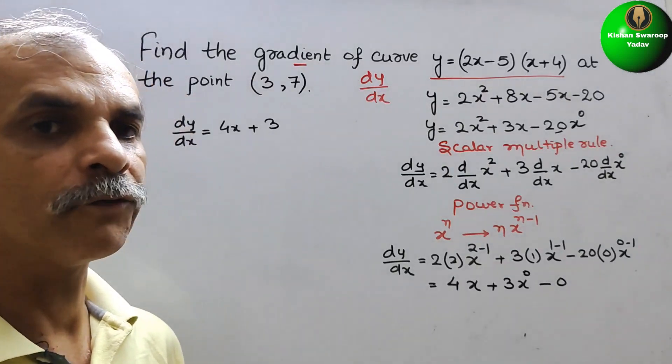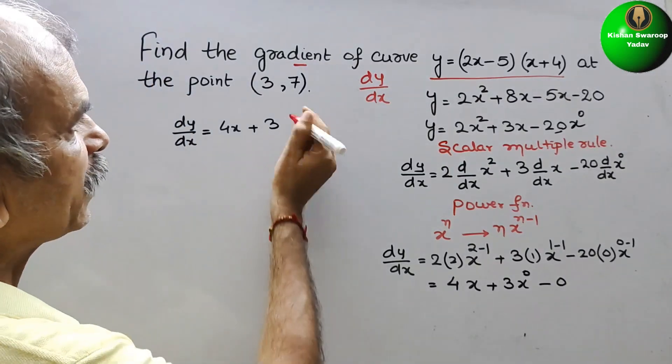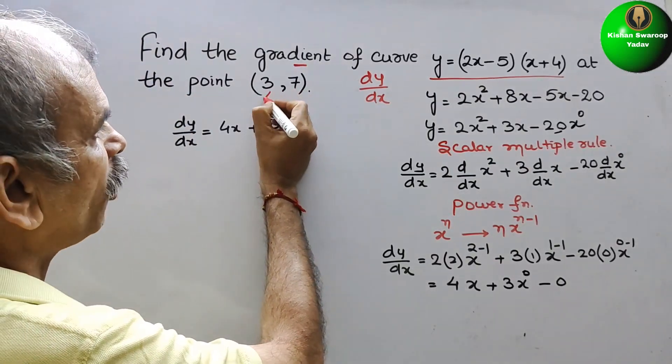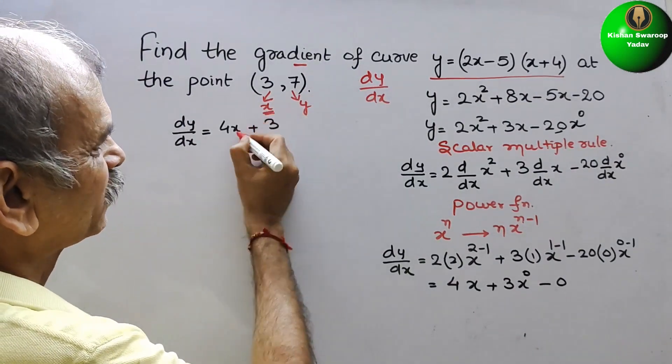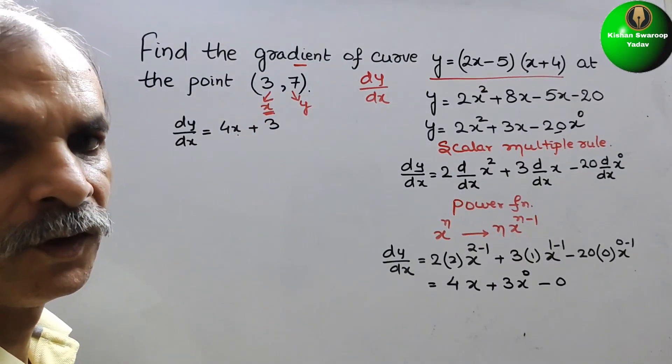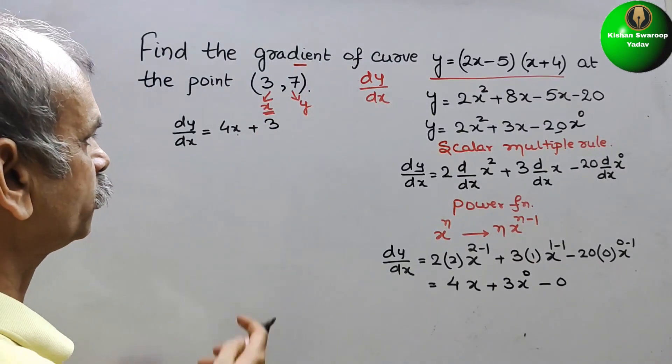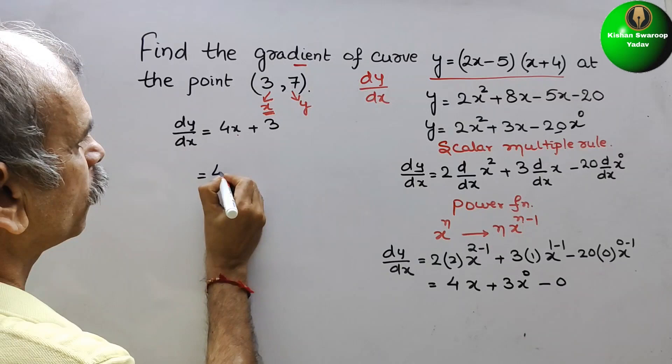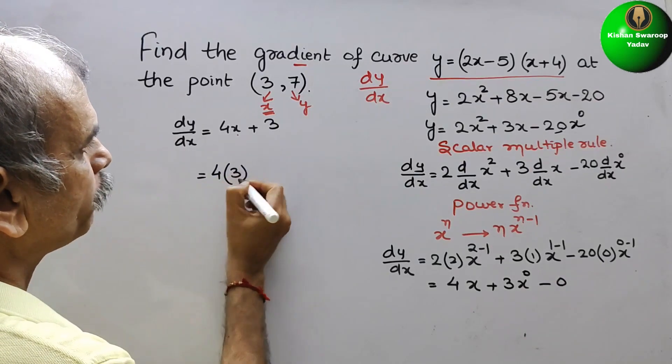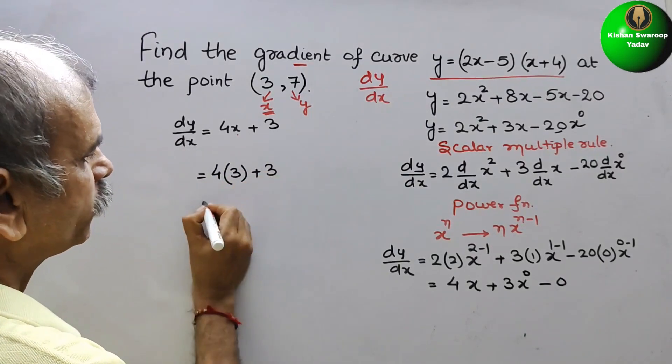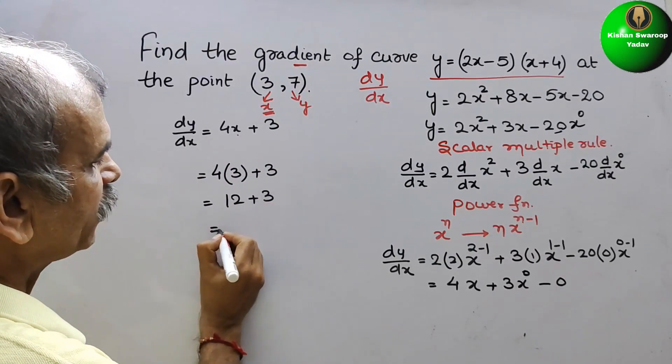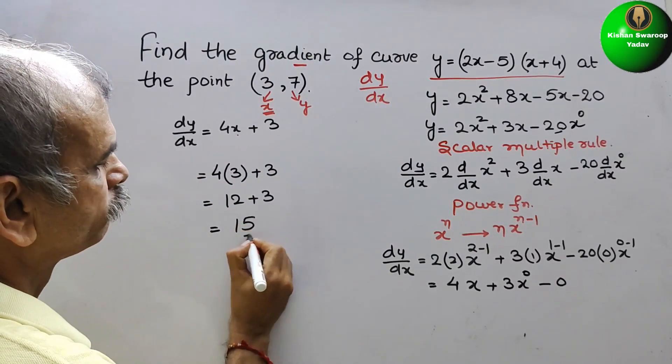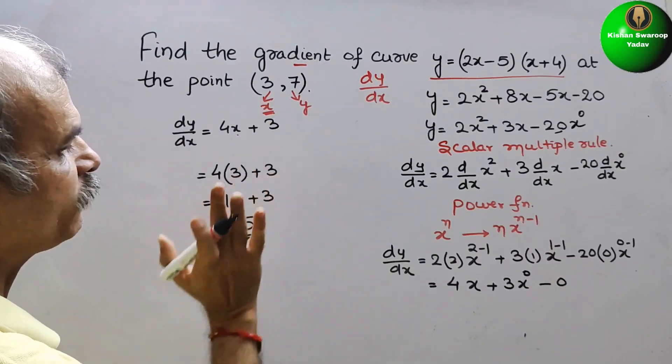Now what we have to do? You can see the coordinate here. So this is for x and this is for y. So we want only x to substitute here. So just substitute it. So therefore we will get 4 times 3 plus 3. So this is equal to 12 plus 3. That is equal to 50. So our gradient is 50.